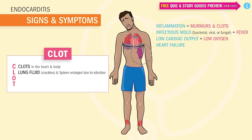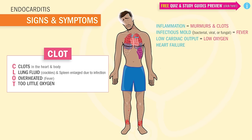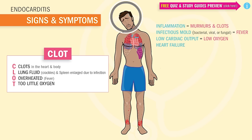The swelling of the spleen is caused by all the white blood cells. Our white blood cells are the defense army fighting the infection, and since the spleen is the house for the white blood cell army, during times of infection the spleen beefs up and holds more troops. O is for overheating — any spike in temperature, known as a fever, as the body fights the infection. And lastly, T is for too little oxygen from too little cardiac output — too little blood coming out of the heart oxygenating the body.